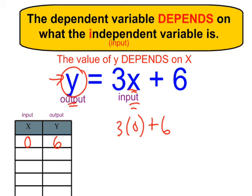Let's do another input for x. That's another way you can remember it — the independent variable is your input. So for our input, let's use 2. Let's replace the x with 2. So 3 times 2 plus 6 — that would be 6 plus 6, which is 12. So if the value of x is 2, then the value of y will be 12.